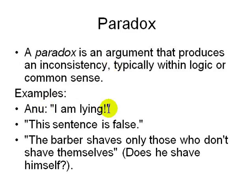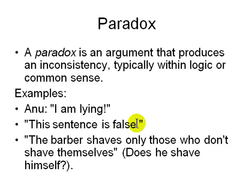Anu says, 'I am lying.' Is she lying? If she is lying, then she is not lying; and if she is actually telling the truth, then she has to be lying. A similar example is 'this sentence is false.' The sentence can't be false because it can't call itself false — it is the same as Anu saying 'I am lying.'